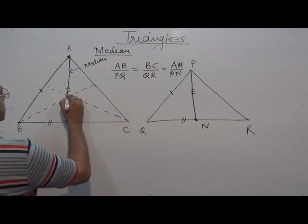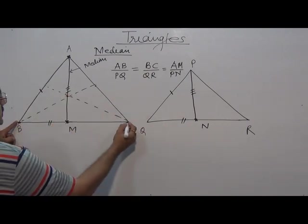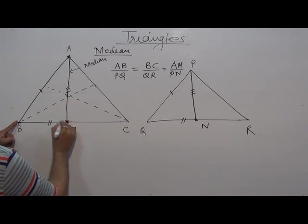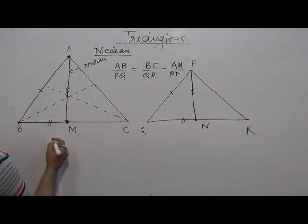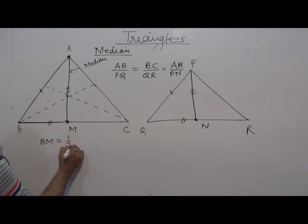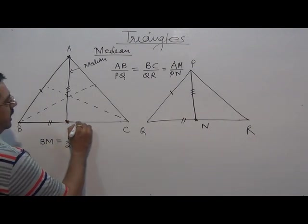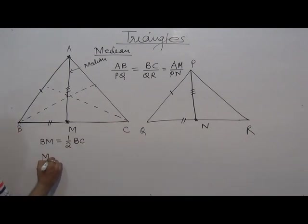So let's see how we can prove similarity. This BC, BC's half length will be BM because by definition it is median. BM is half of BC. Similarly MC, what is MC? It is equal to half of BC.